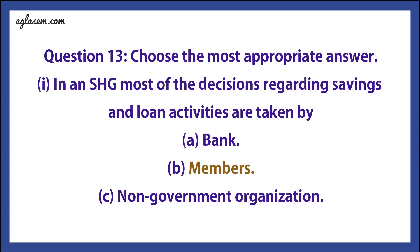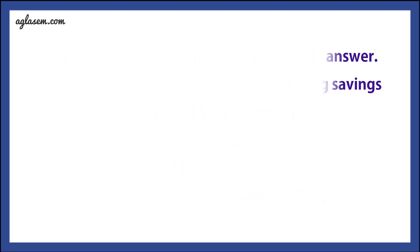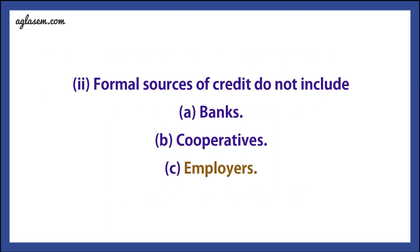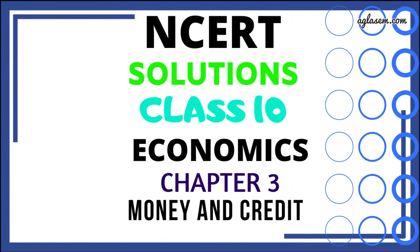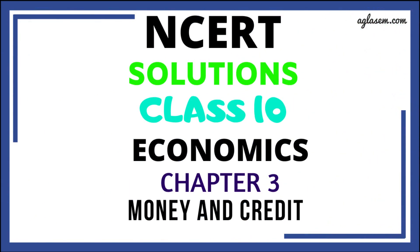Question 13: Choose the most appropriate answer. First: In an SHG, most of the decisions regarding saving and loan activities are taken by — answer: members. Second: Formal sources of credit do not include — answer: employers. Here I have covered all the questions of this chapter.